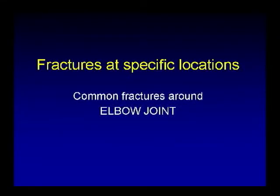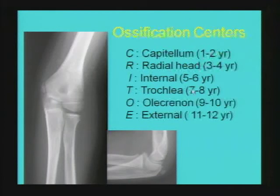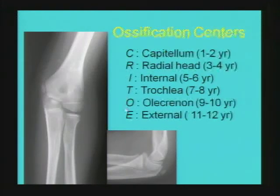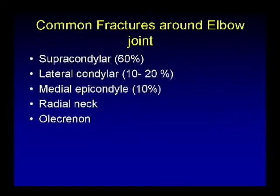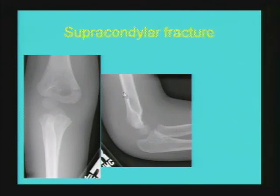A quick look at fractures at specific locations, starting with fractures around the elbow joint. Normal lines used to detect supracondylar fractures and radiocapitellar alignment include the anterior humeral line and radiocapitellar line. It is helpful to remember the order of ossification using the familiar mnemonic, from capitulum to lateral epicondyle. The commonest elbow fracture is supracondylar, followed by lateral condylar and medial epicondylar fracture. This example shows a supracondylar fracture with disruption of the anterior humeral line, posterior displacement of the capitulum, and moderate-to-severe joint effusion demonstrated by displacement of anterior and posterior fat pads.